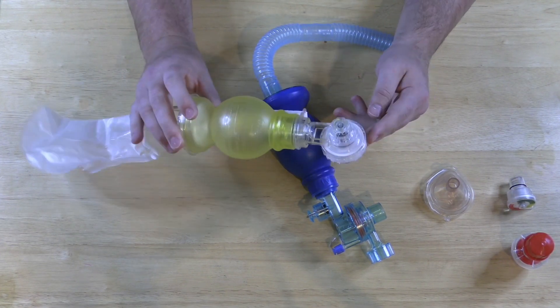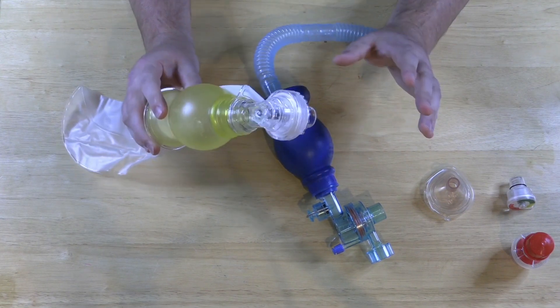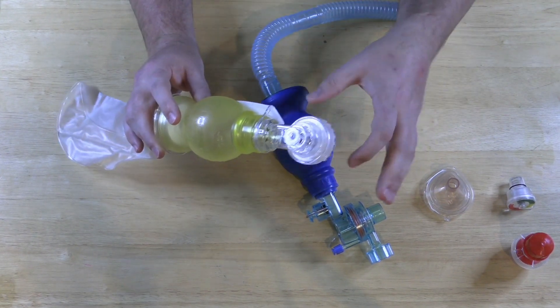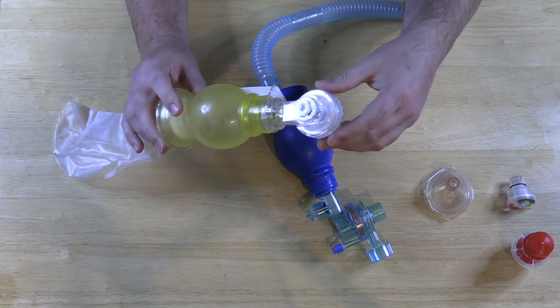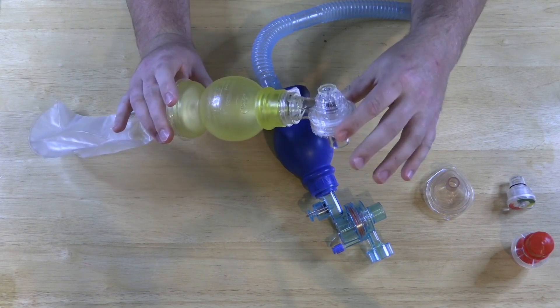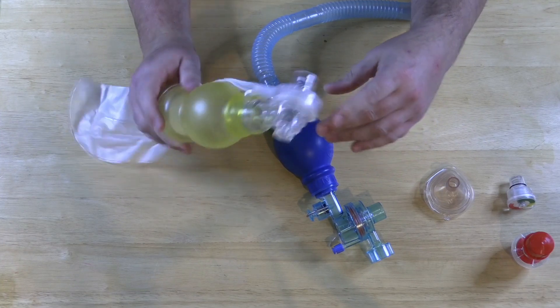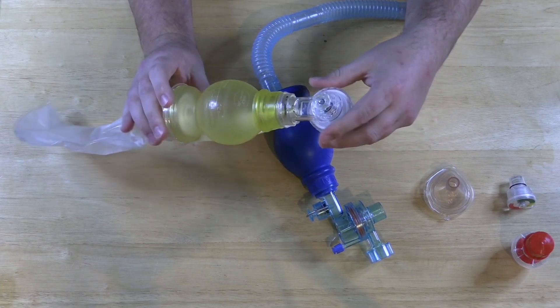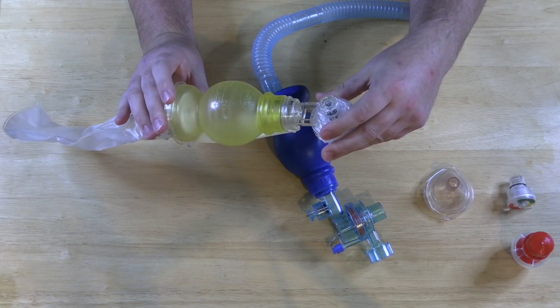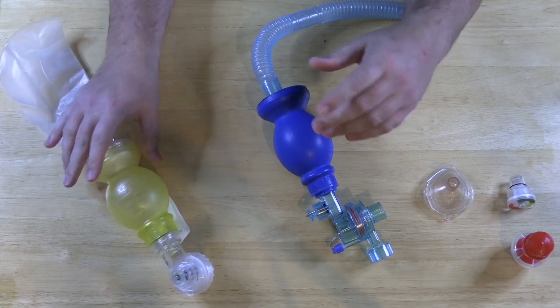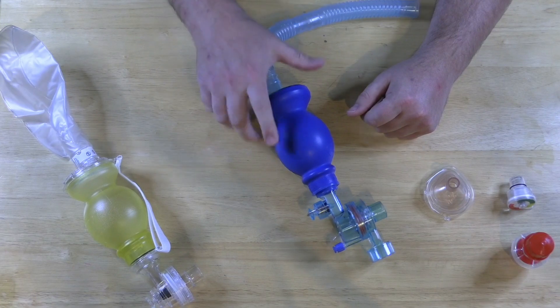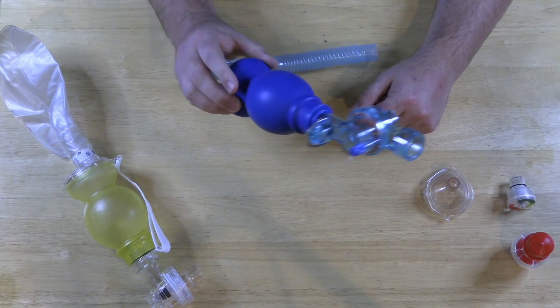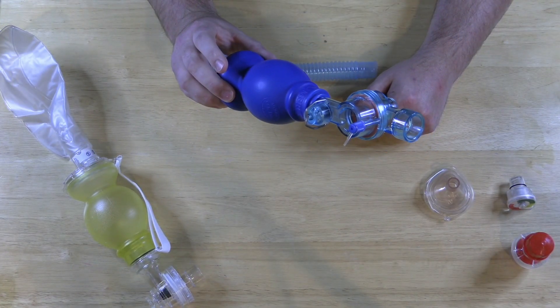It doesn't have a spot for a manometer and if you want those things there's probably an additional piece you can buy. Anytime you have to put together Lego pieces to use a BVM, it's probably not going to be something you can do in the event of a resuscitation. So I'm going to put this one aside. There's one thing I do like better about this one and I'll tell you what that is in just a second.